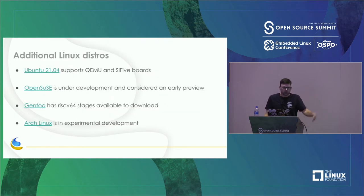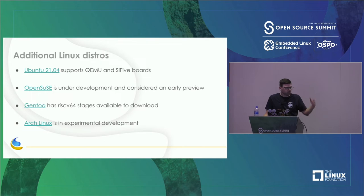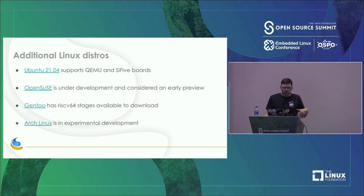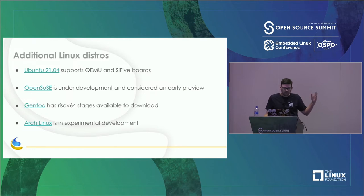Other distros working on RISC-V: Ubuntu has support in 21.04 for QEMU and some SiFive boards, and they have a team focusing on RISC-V. OpenSUSE has support currently under development as an early preview. Gentoo has 64-bit RISC-V stages available, and Arch is still in experimental development mode.